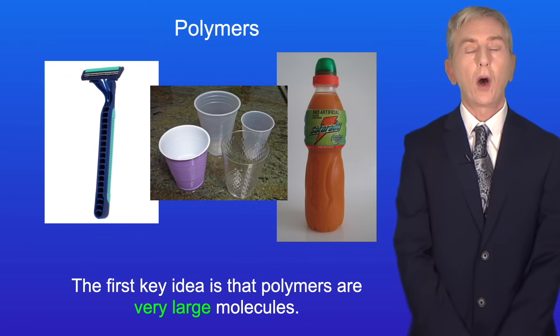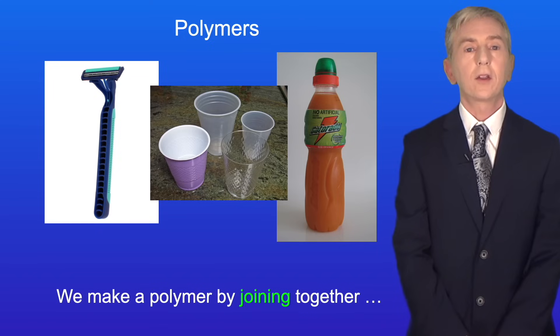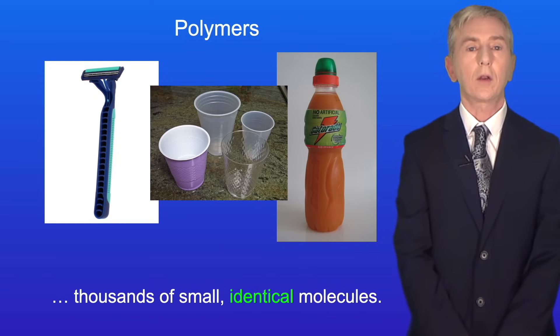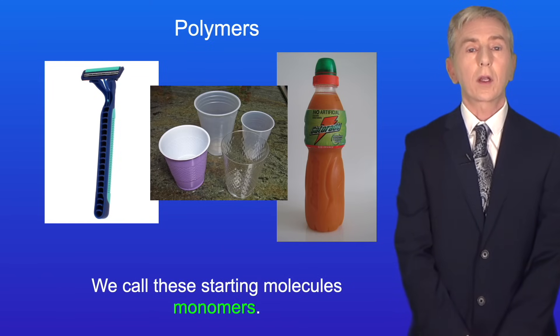Now the first key idea is that polymers are very large molecules. We make a polymer by joining together thousands of small identical molecules and we call these starting molecules monomers.